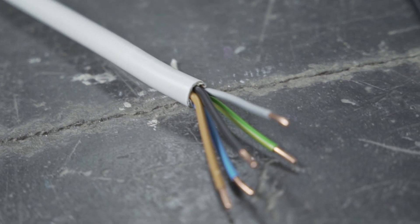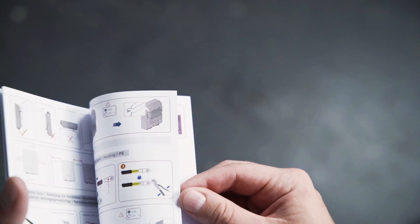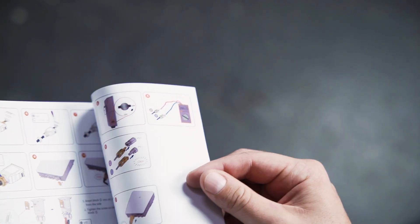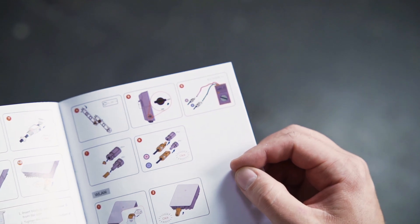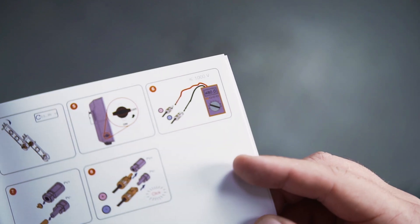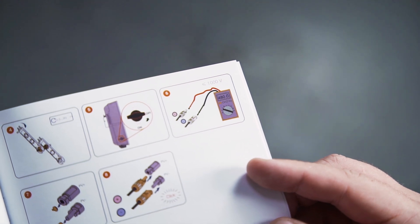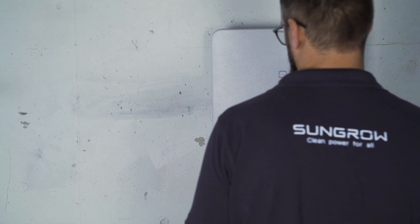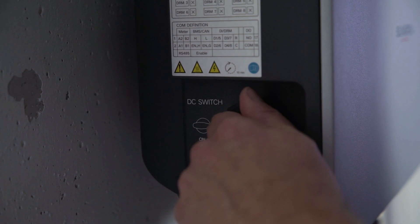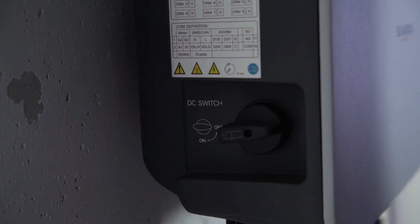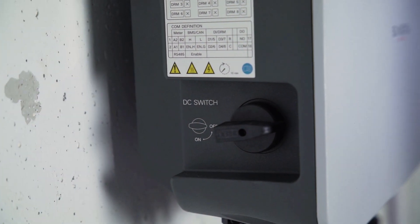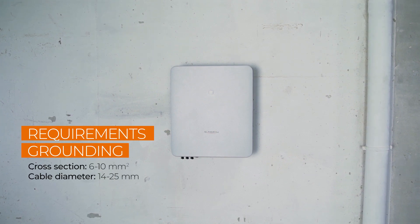Before installation, make sure by measuring that the cables are really voltage free. You will find all cable requirements and wire sizes necessary for commissioning in our manual. Furthermore, you have to set the DC switch on the left side of the inverter from on to off. Now let's continue with the installation.